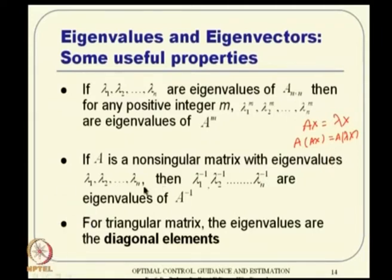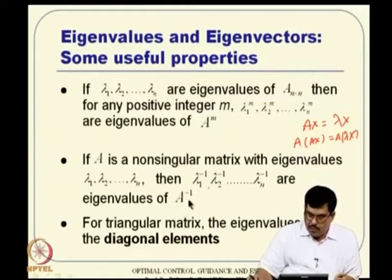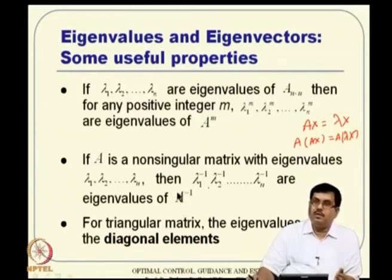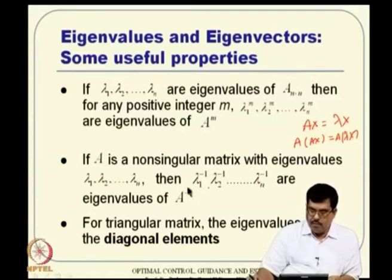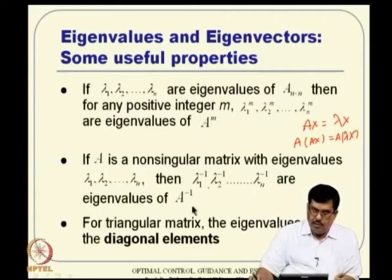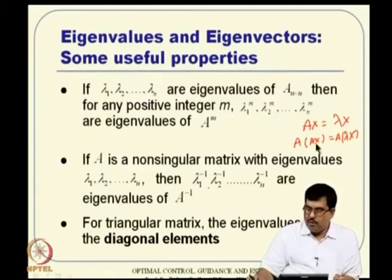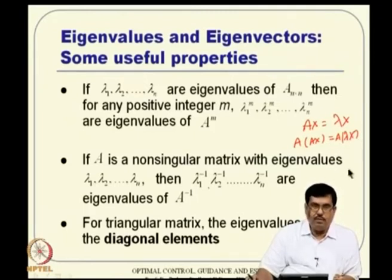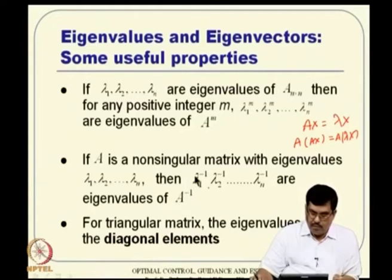Similarly, if I know the eigenvalues of A already, then A-inverse has eigenvalues that are 1/lambda. It is easy to show by multiplying both sides of Ax equal to lambda x by A-inverse. For a triangular matrix — either upper or lower triangular, with diagonal matrices as special cases — the eigenvalues are nothing but the diagonal elements. This is easy to show: the determinant equation factorizes as (lambda minus A_11)(lambda minus A_22)(lambda minus A_33)... equal to 0.